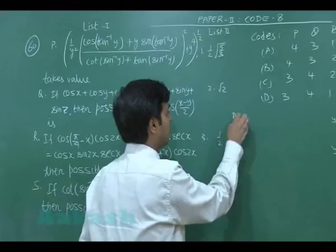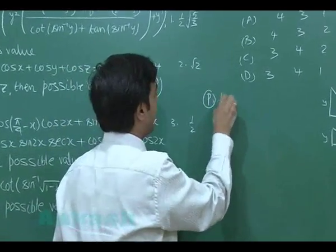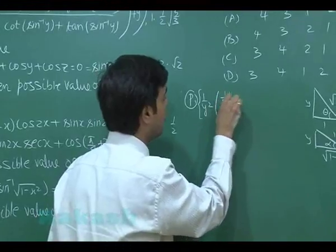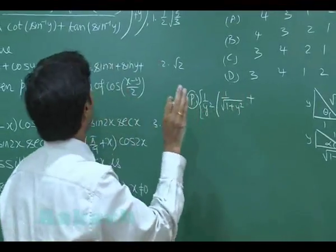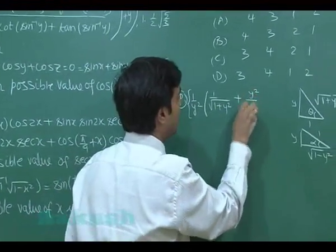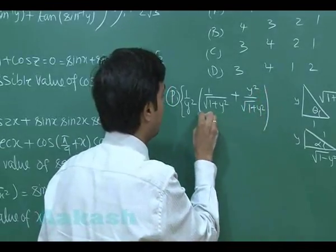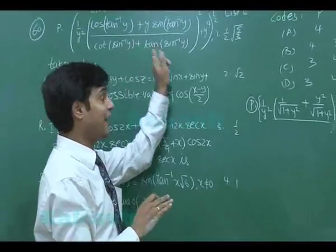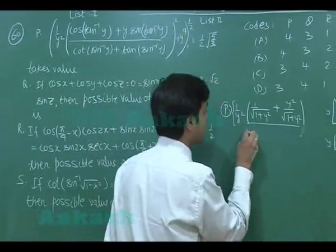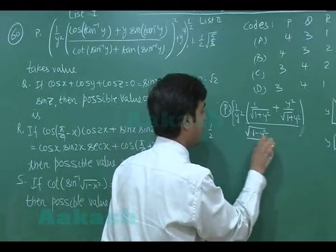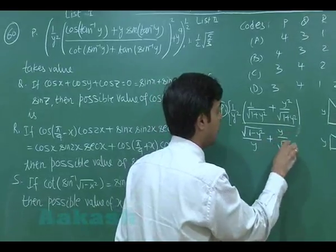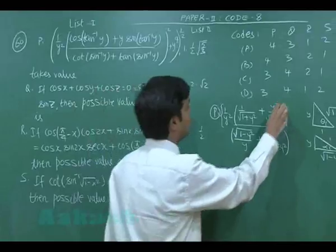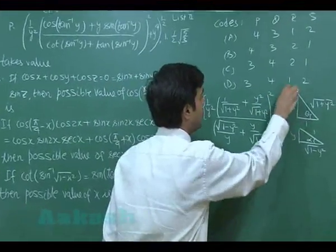Substituting into Part P: the numerator becomes (1/y²)[1/√(1 + y²) + y · y/√(1 + y²)] = (1/y²)·(1 + y²)/√(1 + y²). The denominator becomes [cot α + tan α]² = [√(1 − y²)/y + y/√(1 − y²)]² = [1/(y√(1 − y²))]² · (1 − y² + y²)² = 1/(y²(1 − y²)). Then plus y⁴, all to the power of one half.